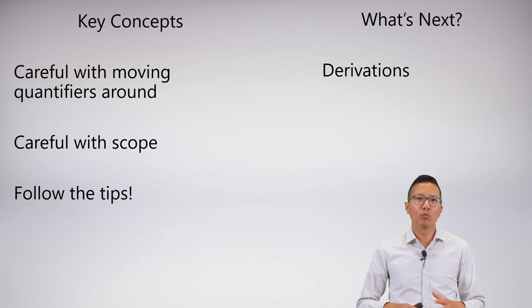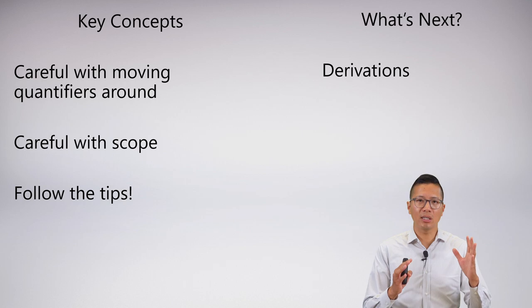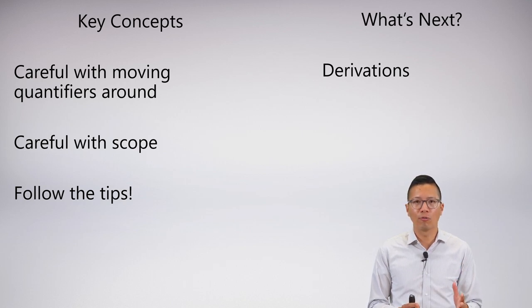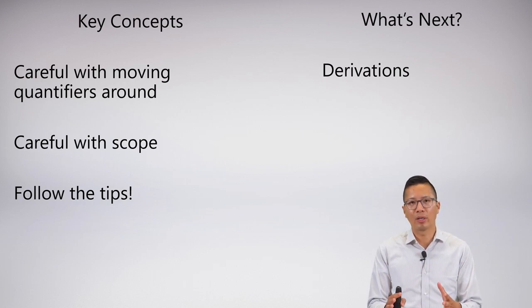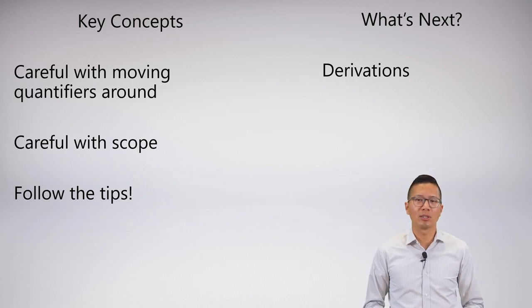All right, that's it for this short video. We're just wrapping up and tying up some loose ends. So just be careful with your scope, careful with moving around the quantifiers. But like I said, you don't have to worry about any of this if you've been symbolizing using the canonical form and following the tips that I've outlined with respect to scope and so on. What's next? Well, that's the end of this unit. We have a little wrap-up video. But our next tool that we need is that proof system, its derivations.